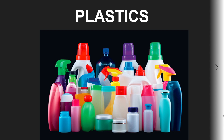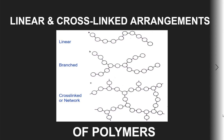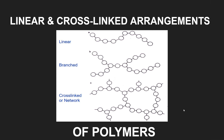Plastics form an important class of synthetic material. In plastics, the arrangement of the individual units can be either linear, branched, or cross-linked. Cross-linked is also called network form. These are the arrangements of the polymers.